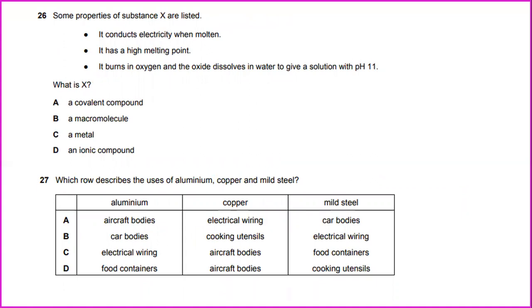Some properties of substance X are listed. It conducts electricity when molten, it has a high melting point, and it burns in oxygen and the oxide dissolves in water to give a solution with pH 11. What is X? X is a metal.